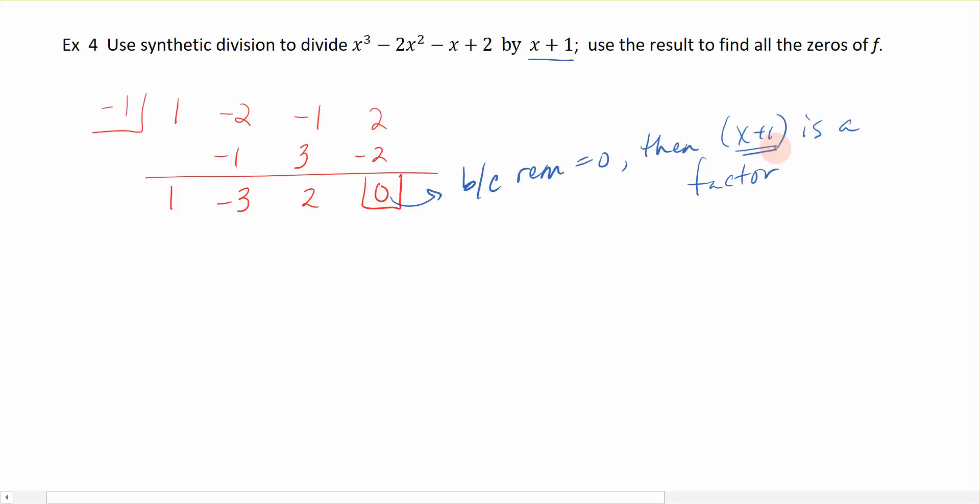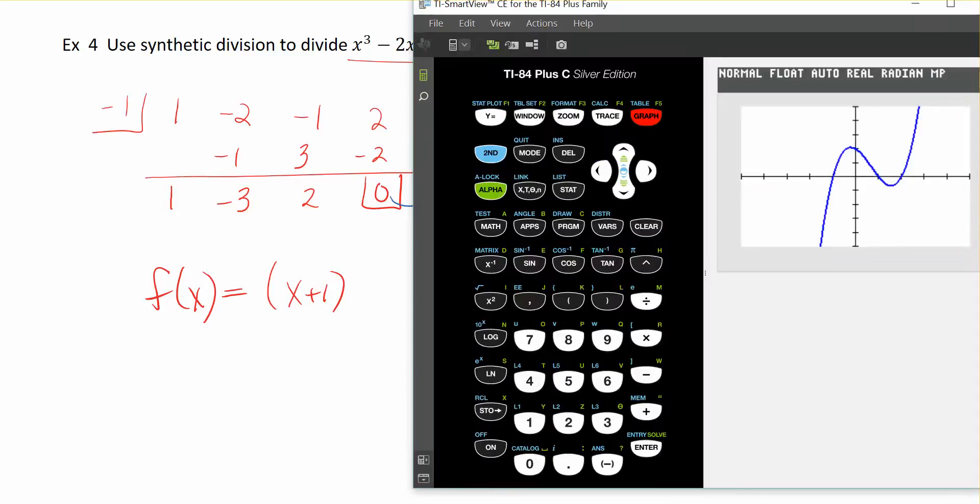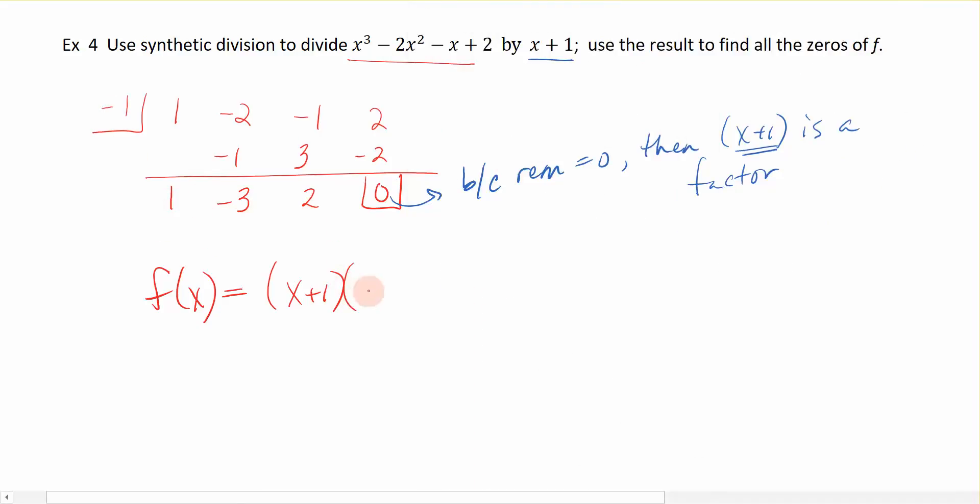So what do we have now? We know that my polynomial right here can start to be written as a product of its factors. So I have the function f of x. I know that x plus 1 is a factor. And when I divided my polynomial by x plus 1, I got this right here, didn't I?